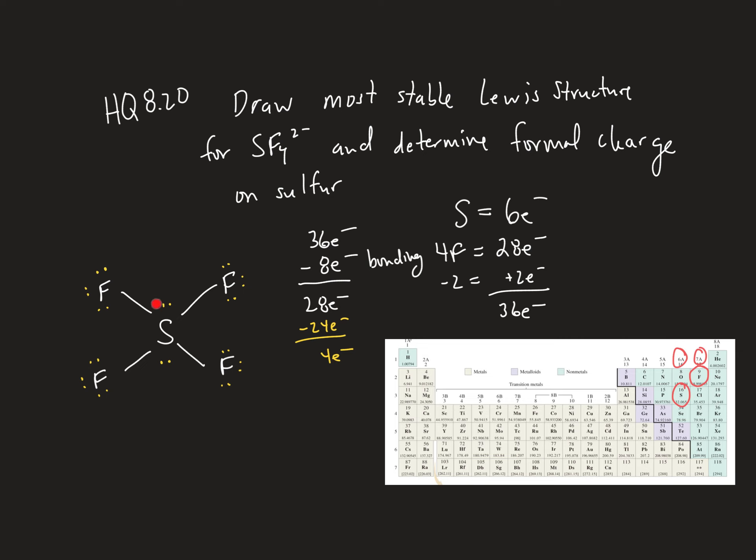So I can assign 1, 2, 3, 4 more electrons to sulfur, giving it a total of 12 electrons.